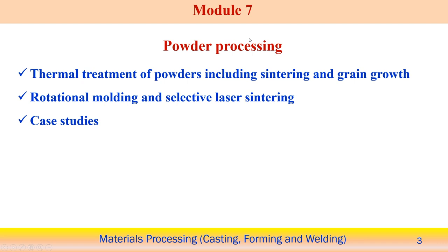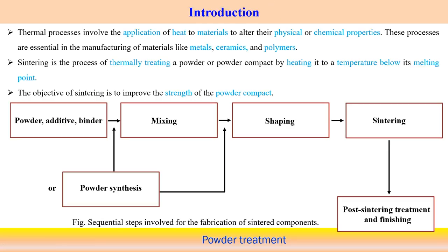In powder processing, we will first discuss the thermal treatment of powders, then rotational molding, and after that some case studies associated with this topic. Thermal processing is basically the application of heat — what can be the behavior of the powder material with application of heat, and what physical and chemical changes or properties change with application of heat.